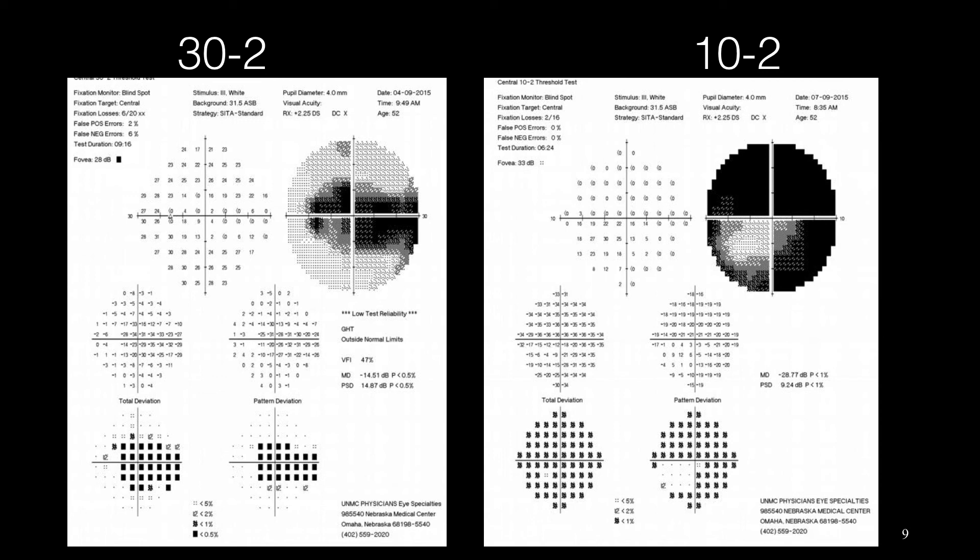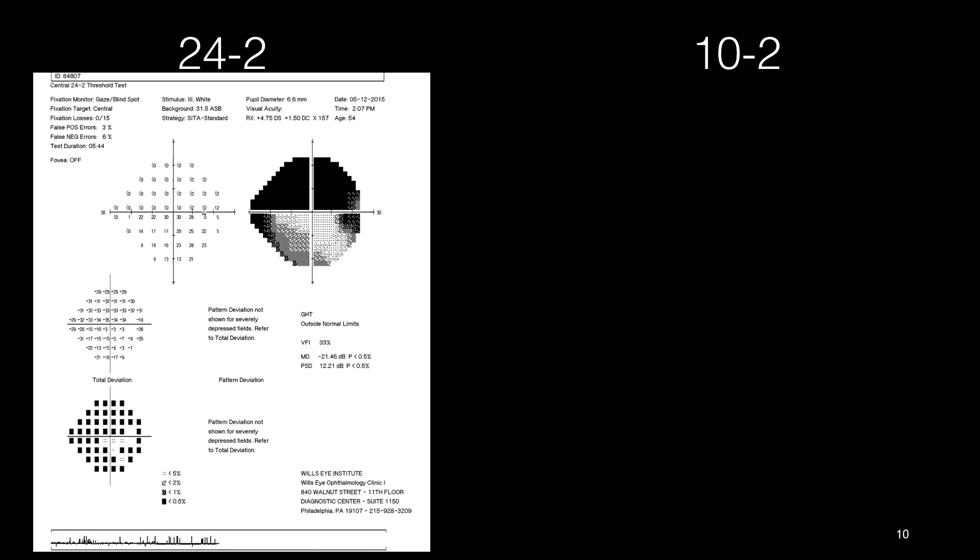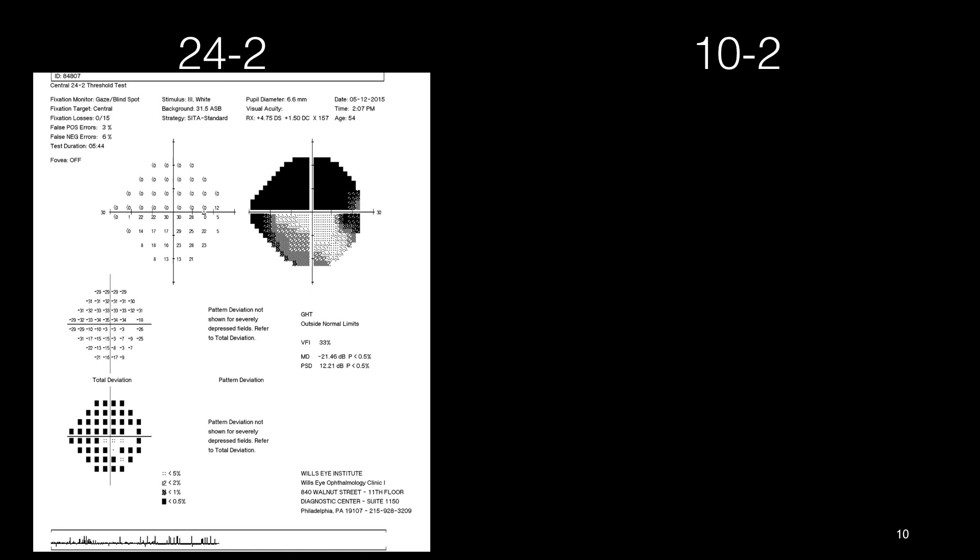This is another example of a patient with superior altitudinal defect with no threshold value above the horizontal line. After checking the 10-2, we can see some points with threshold value above the line, which could be really helpful for follow-up and checking the progression of the disease.